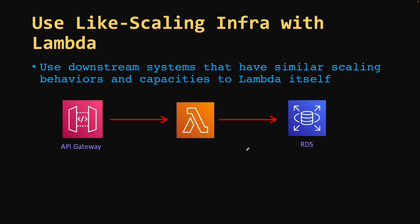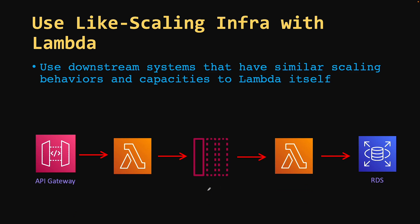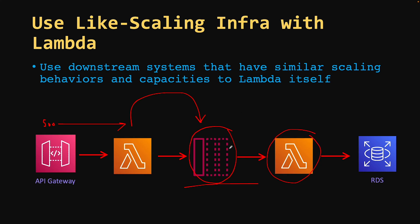To fix this, you need to tweak your architecture and use middleware. For example, you can insert an SQS queue between Lambda and RDS. With 500 requests coming to API Gateway, a Lambda puts those requests into the queue, and a second Lambda picks messages from SQS and stores them to the database. On this second Lambda, you can implement reserved concurrency — say 20 instances — so there are only 20 simultaneous connections to RDS. Another solution is to use DynamoDB instead of RDS, since DynamoDB is a serverless database and scales with your requests.